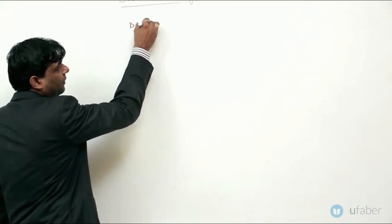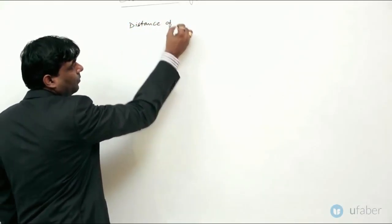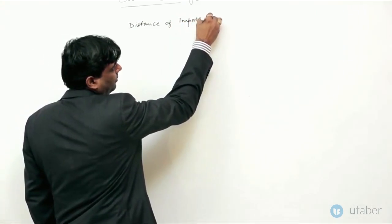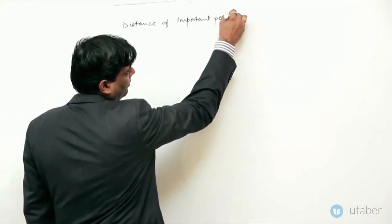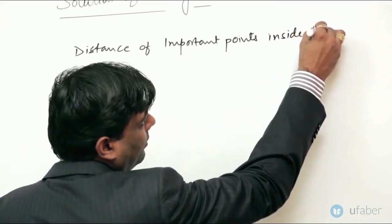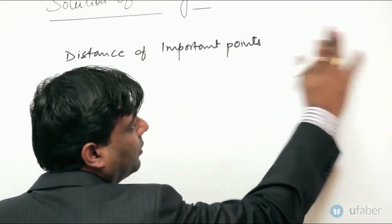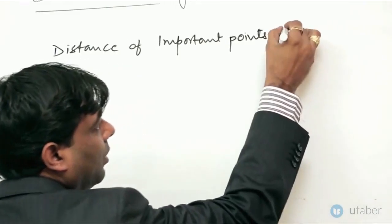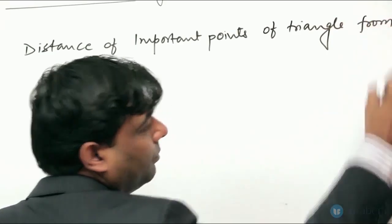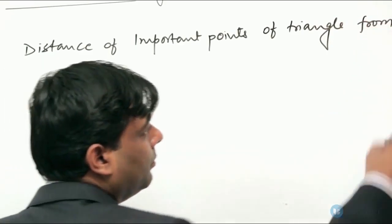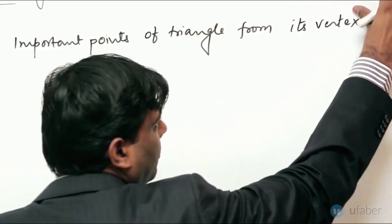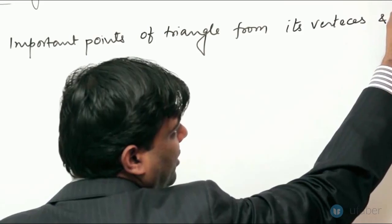Distance of important points inside triangle, important point of triangle from its vertices and its sides.